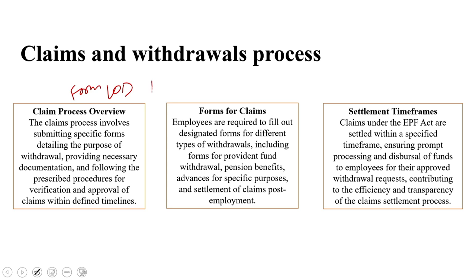There is also a transfer request form — if you change jobs, you can use this form to seamlessly transfer your EPF account to your new employer. You must also attach necessary documents supporting your claim application, typically including bank account details, bank card, and any other documents specified for the type of claim you are filing. The EPFO offers an online portal allowing you to conveniently track the status of your claim application, providing transparency and keeping you informed about the progress of your claim. Upon settlement approval, the EPFO will electronically transfer the sanctioned amount directly to your designated bank account.